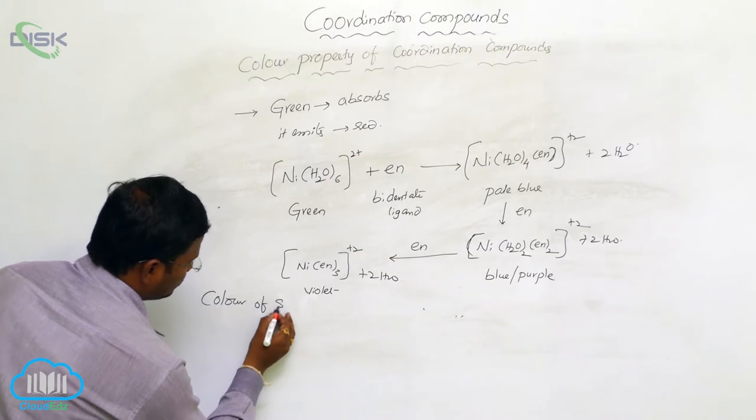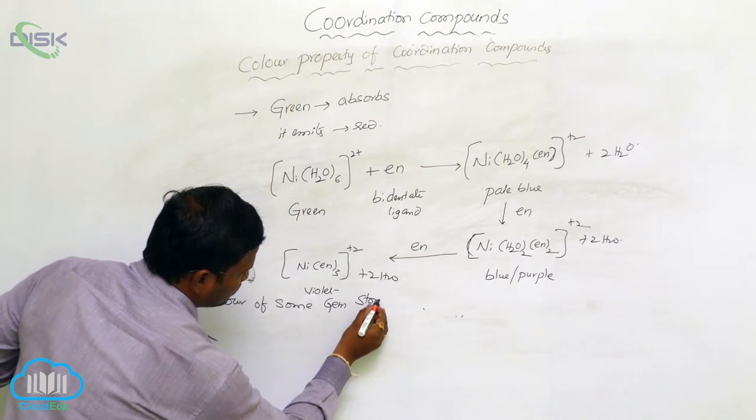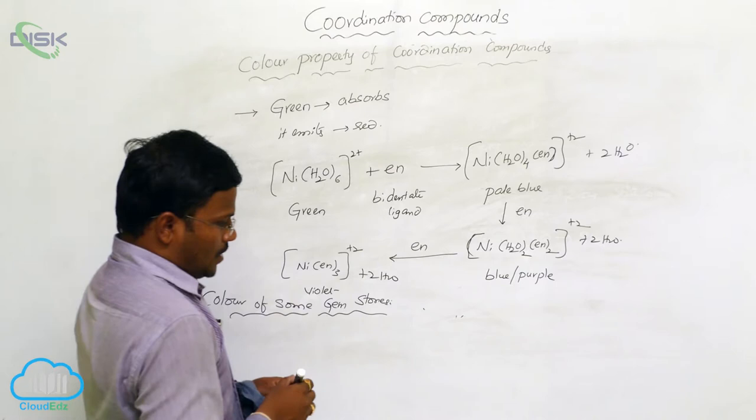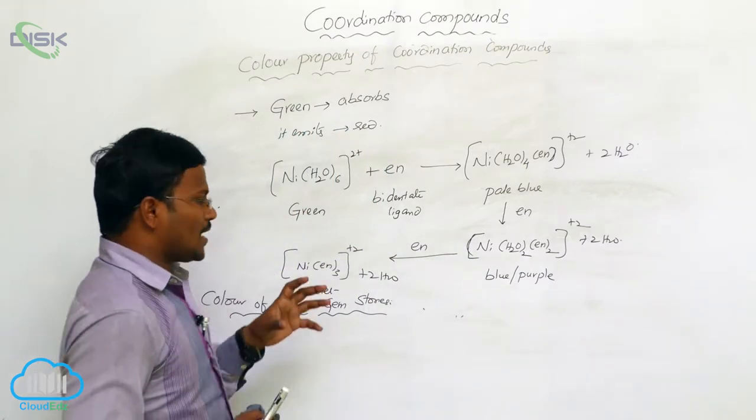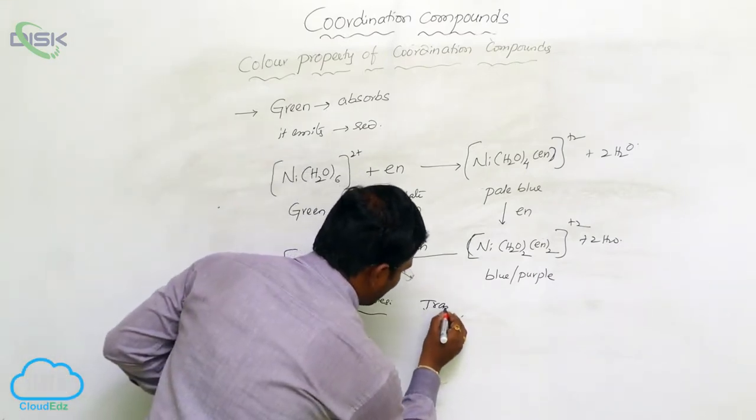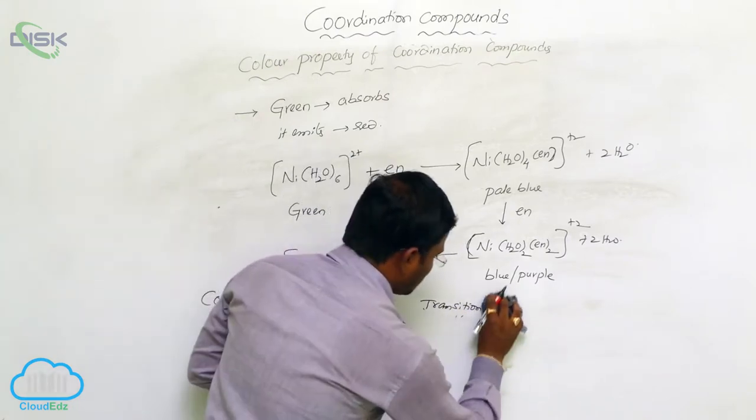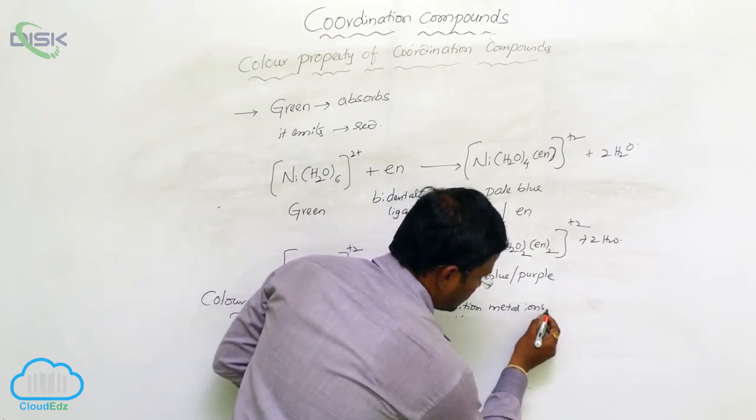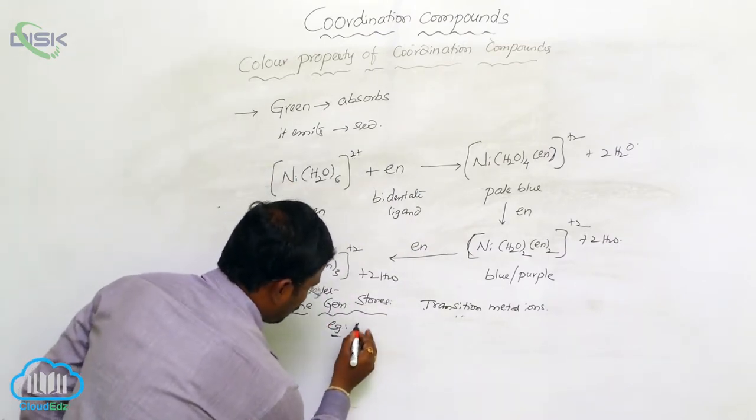The most important condition based on this statement is color of some gemstones. Color stones are available which exert colors due to presence of various types of transition metal ions. For example, let us consider ruby.